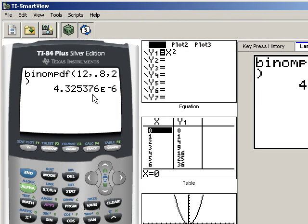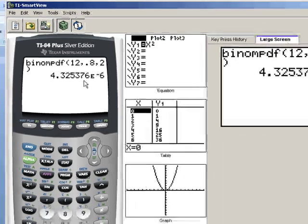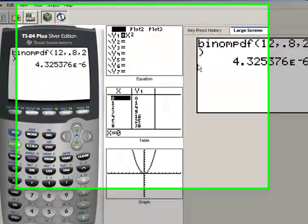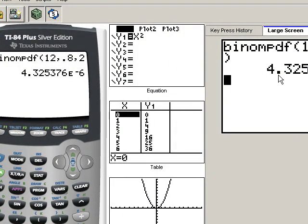And that is the probability of getting exactly two jurors that are of this order, of the Mexican American order. Notice it says 4.325376E to the negative 6. So what we would do is we would take our decimal point, see how it is right there after the 4, and we'd move that 5 places over. So the actual number would be 0.00004325376.